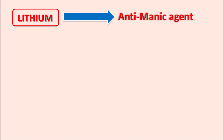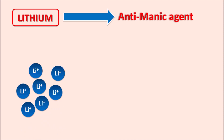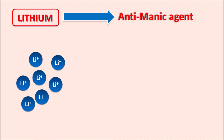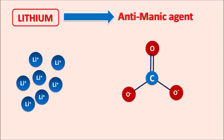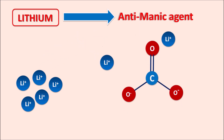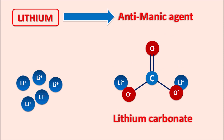Lithium is a drug used as an antimanic agent, particularly in bipolar depressive disorder where the patient experiences two phases — both mania and depression — with mood swings between them. Lithium is used to decrease the manic phase. It is one of the lightest metals used as a drug and is combined with carbonate to form lithium carbonate, which is used as an antimanic agent.